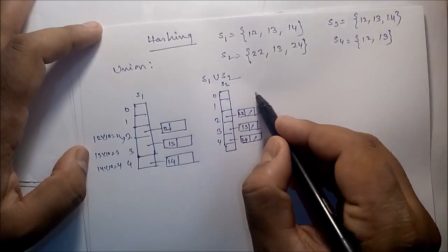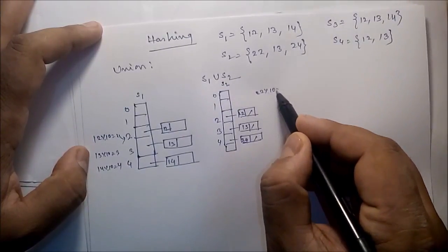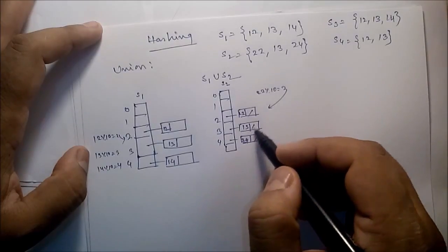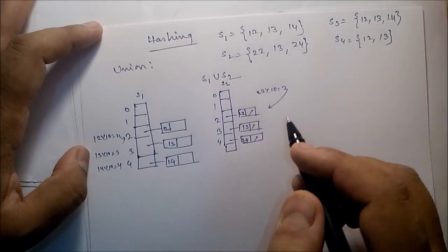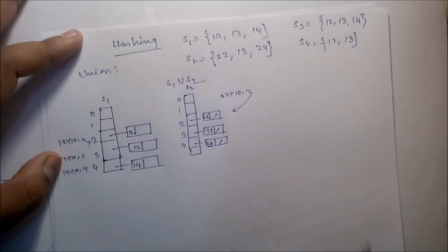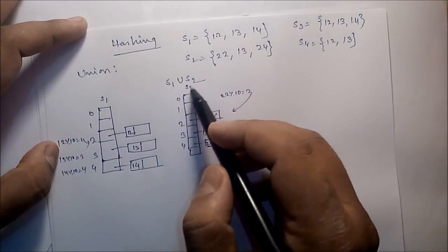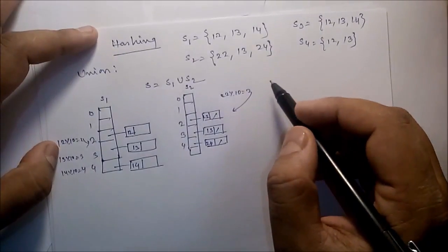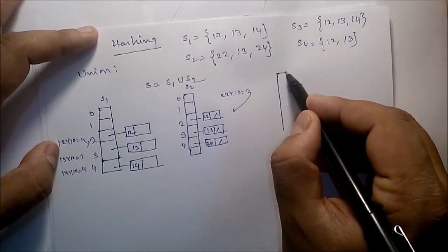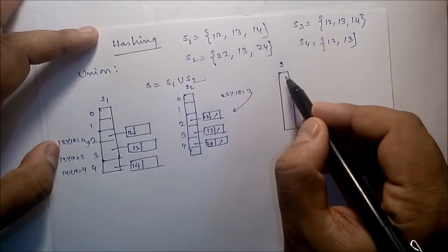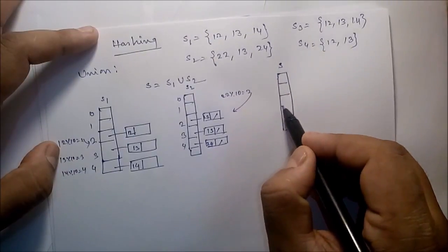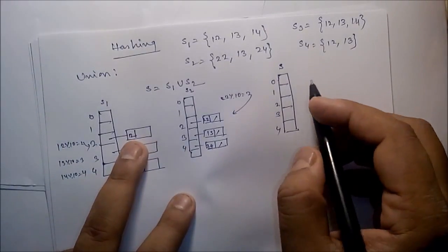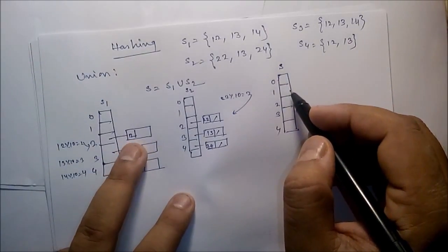Similarly for S2: 22 modulo 10 is 2, store here. 13 modulo 10 is 3, store here. 24 modulo 10 is 4, store here. Now suppose we want to apply union — S is equal to S1 union S2. So we create one hash table with indices 0, 1, 2, 3, 4.